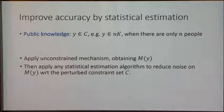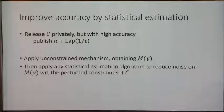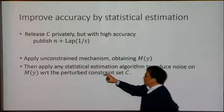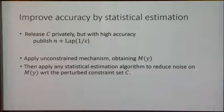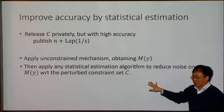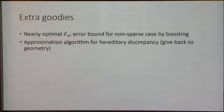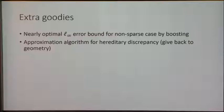This recipe generalizes: even if the population size n is not public, we can release it privately using our mechanism (it's just a counting query), then apply constrained estimation. We can also apply other constraints to reduce error. By using geometric tools with a boosting-like technique in the non-sparse case, we can achieve L∞ error bounds as well.